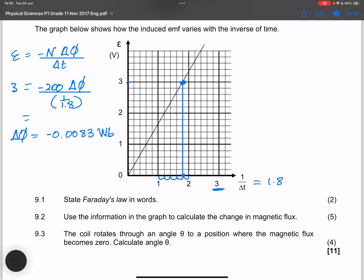Now let's look at the next question. They say that the coil rotates through an angle theta to a position where the magnetic flux becomes zero. Now remember, when does the magnetic flux become zero? When the angle is actually 90 degrees. So in this case, when the angle between the coil and the field would be 90 degrees, that would be that final point there. And they want us to calculate angle theta. So that means the change in magnetic flux would be the final minus the initial. We know that this should give us minus 0.0083, the change that we got. Now how do we calculate the magnetic flux?